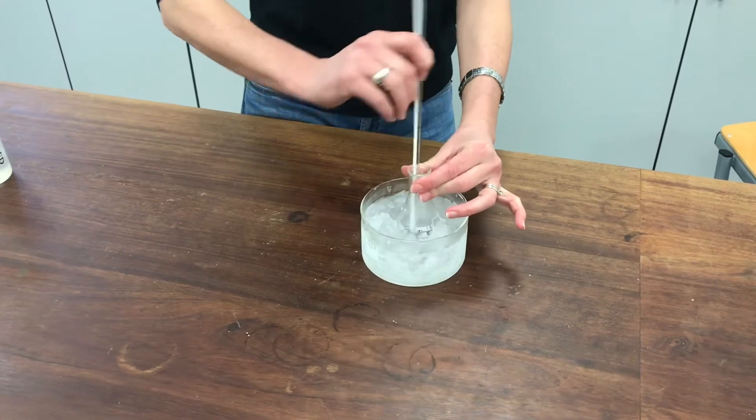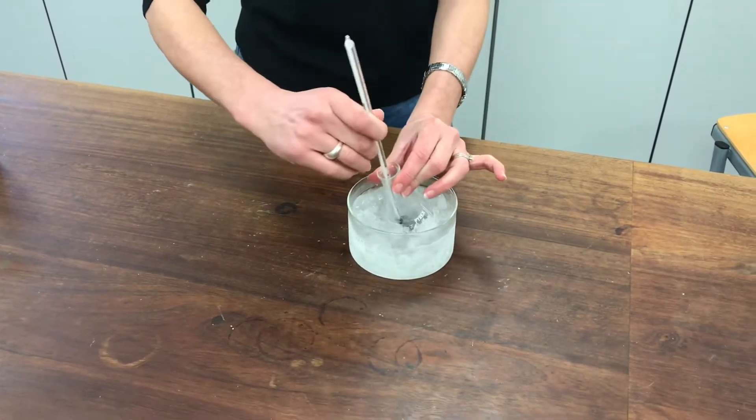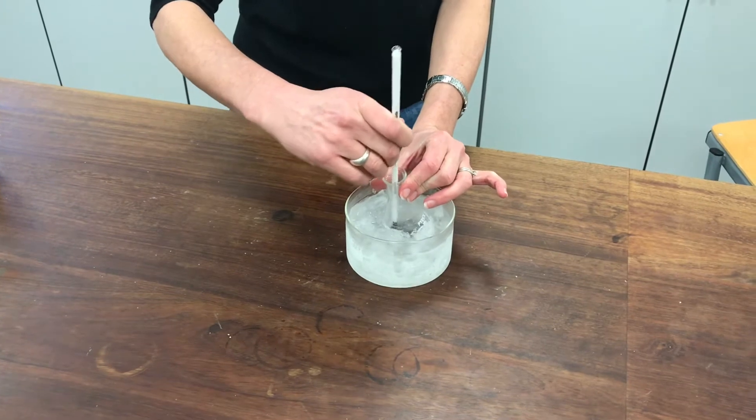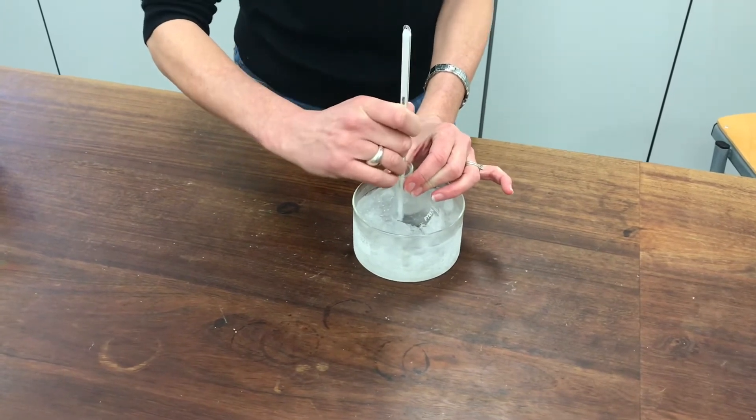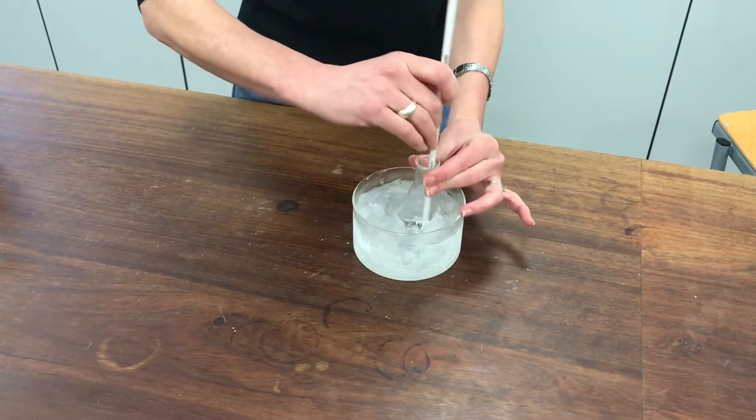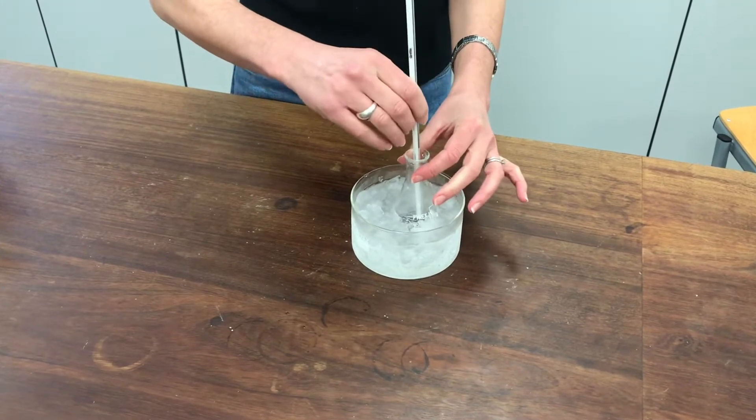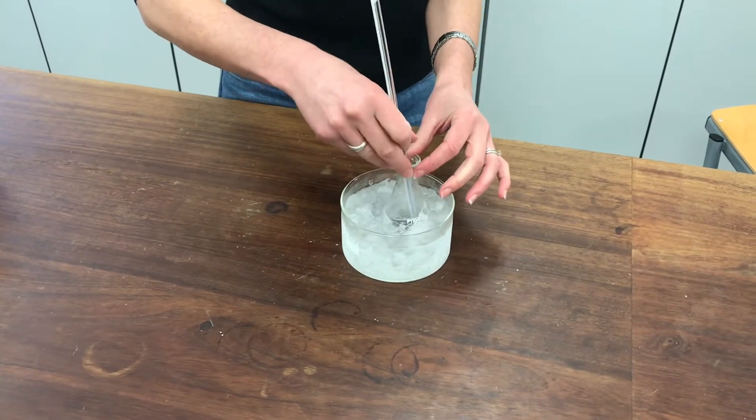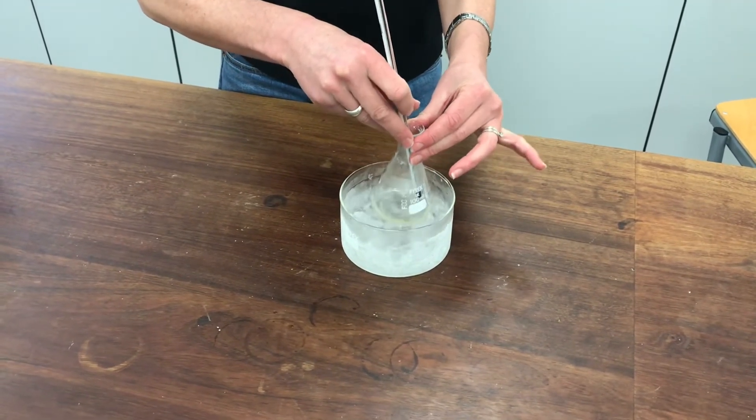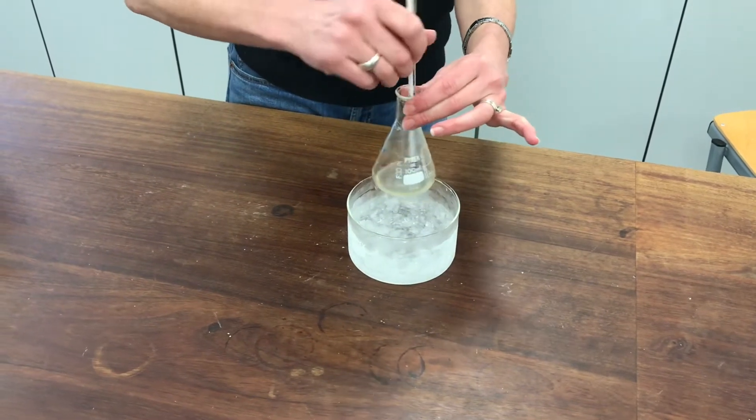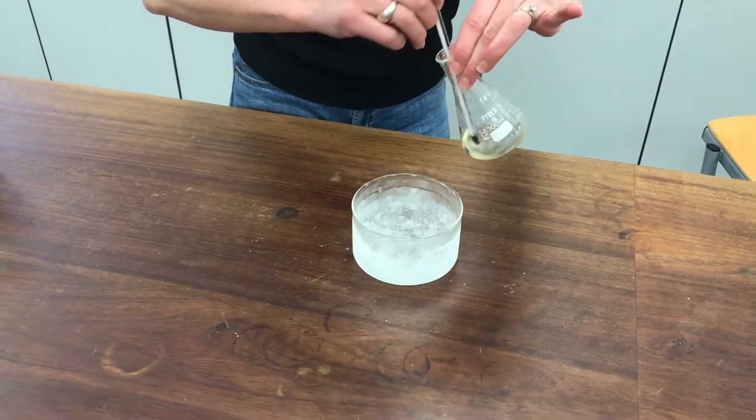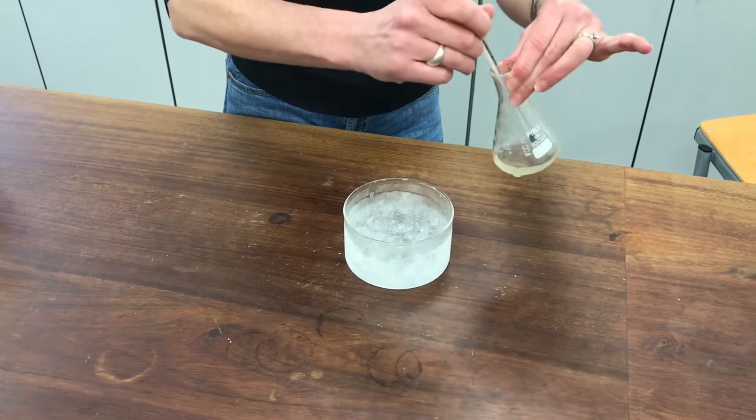OK, I've finally added all the nitrating mixture to my conical flask here. I've kept the temperature really well below 10 degrees. It's actually on about 2 degrees at the moment. It's taken almost 25 minutes to add 4 cubic centimeters of nitrating mixture to my conical flask here. And you can see the conical flask, it's quite oily and resinous looking, the stuff that's in there.